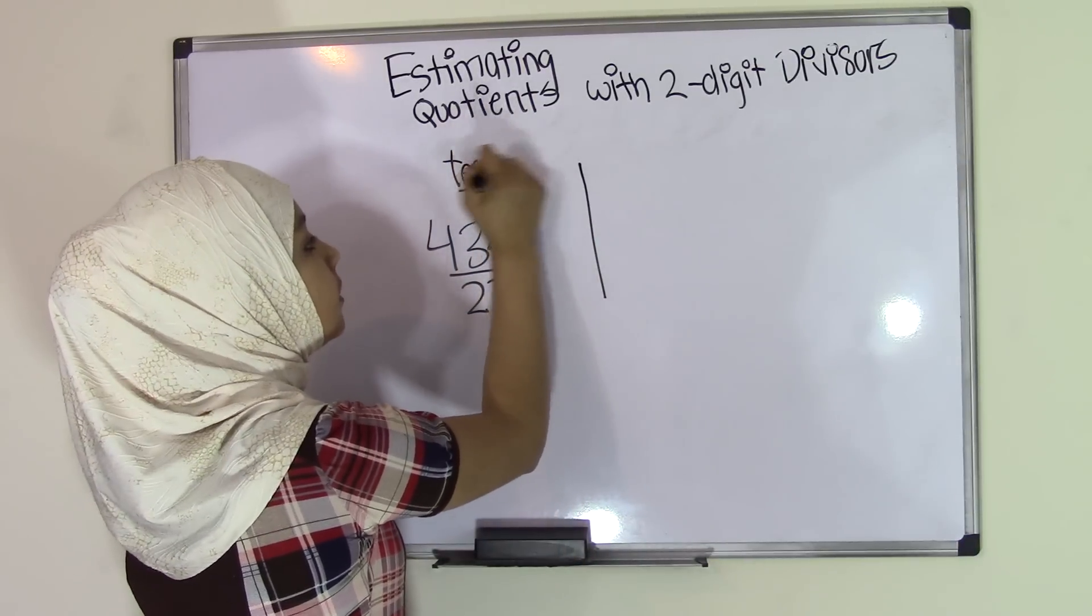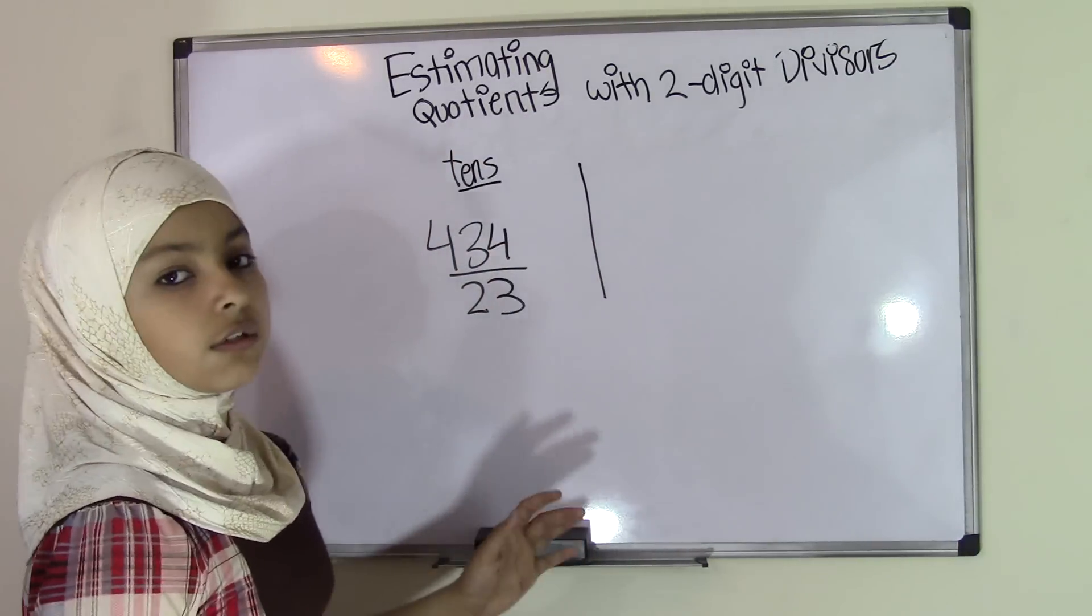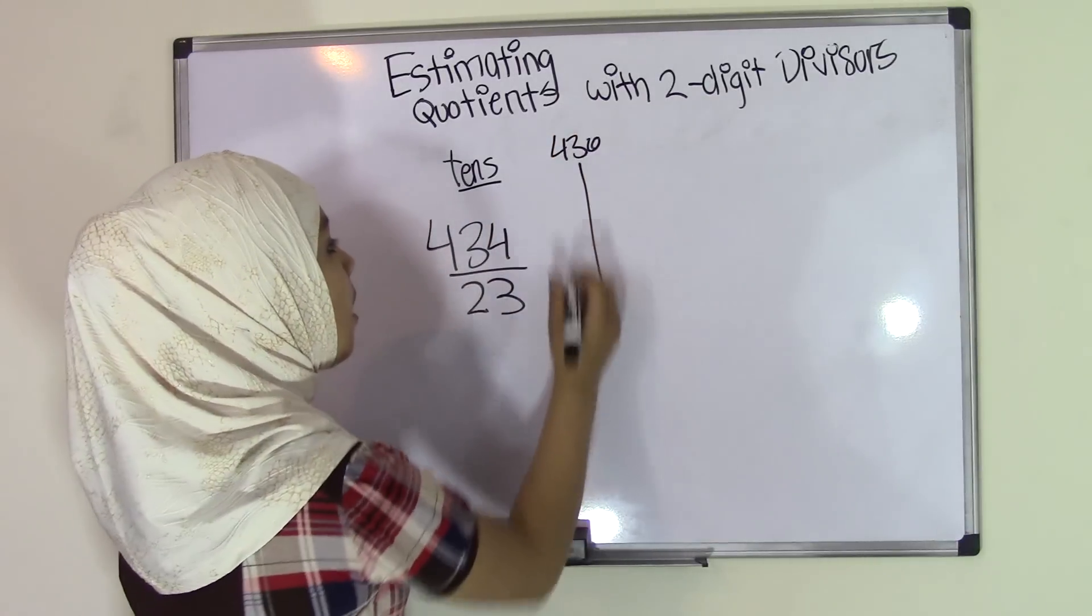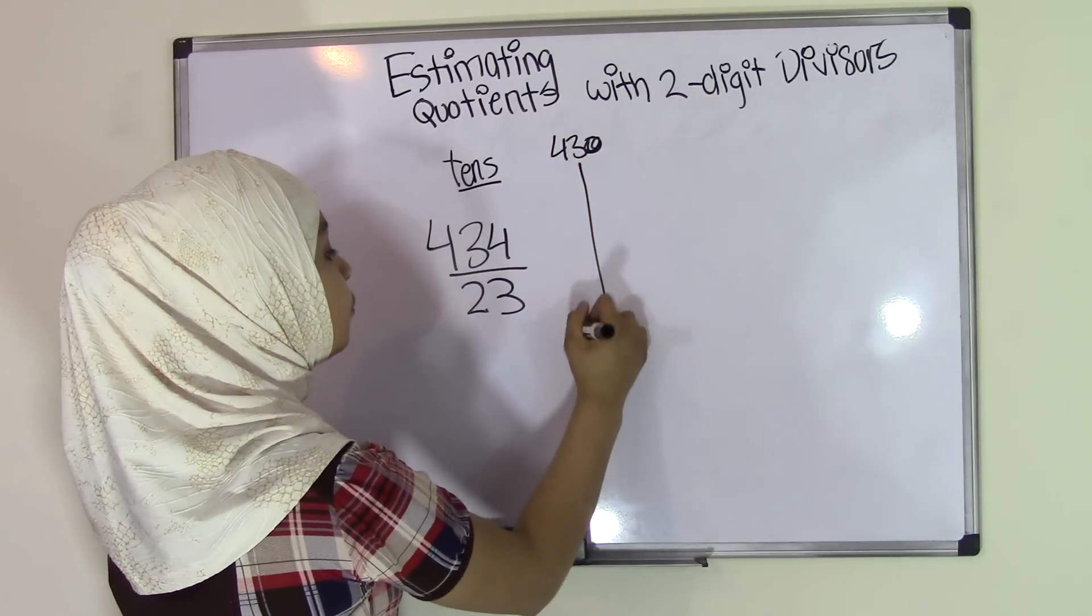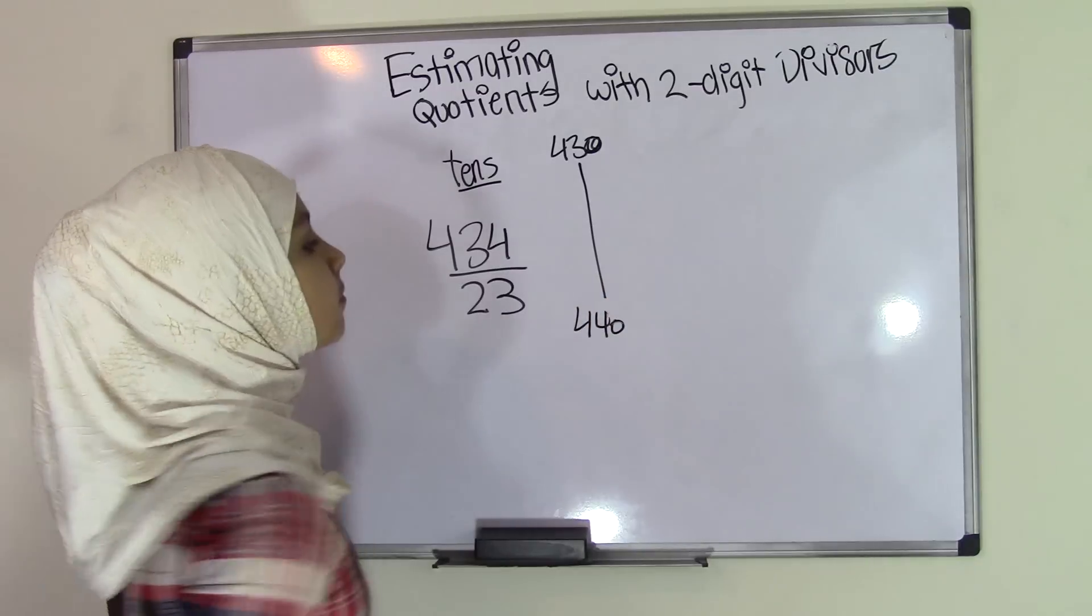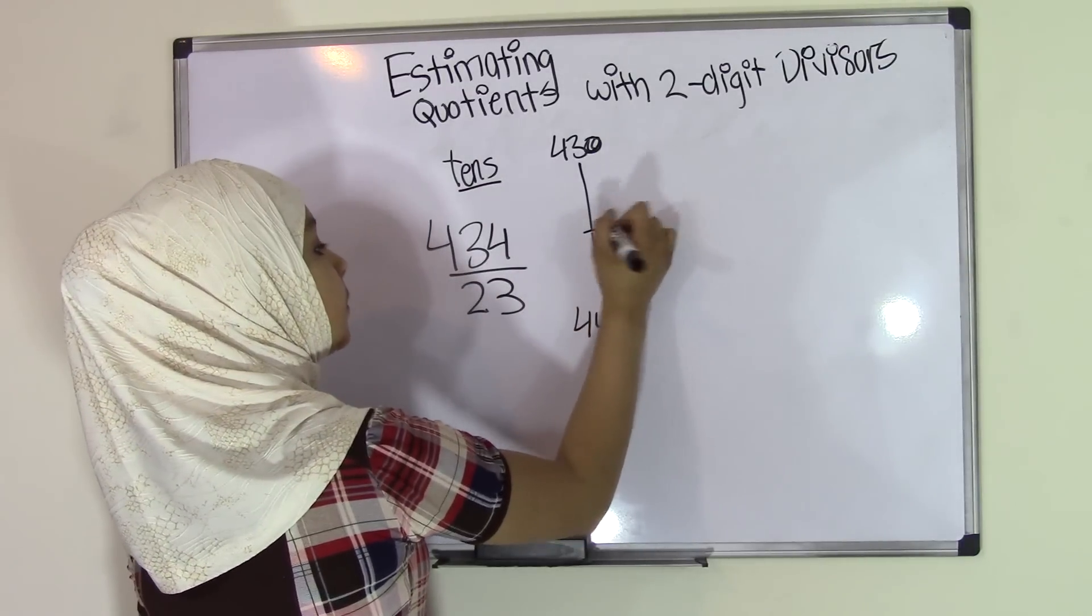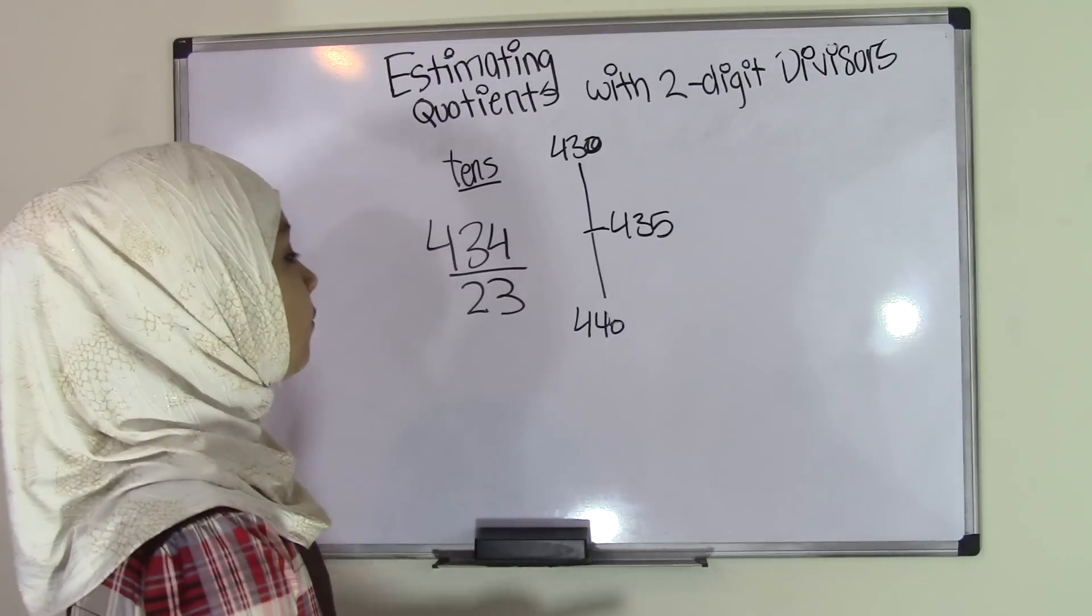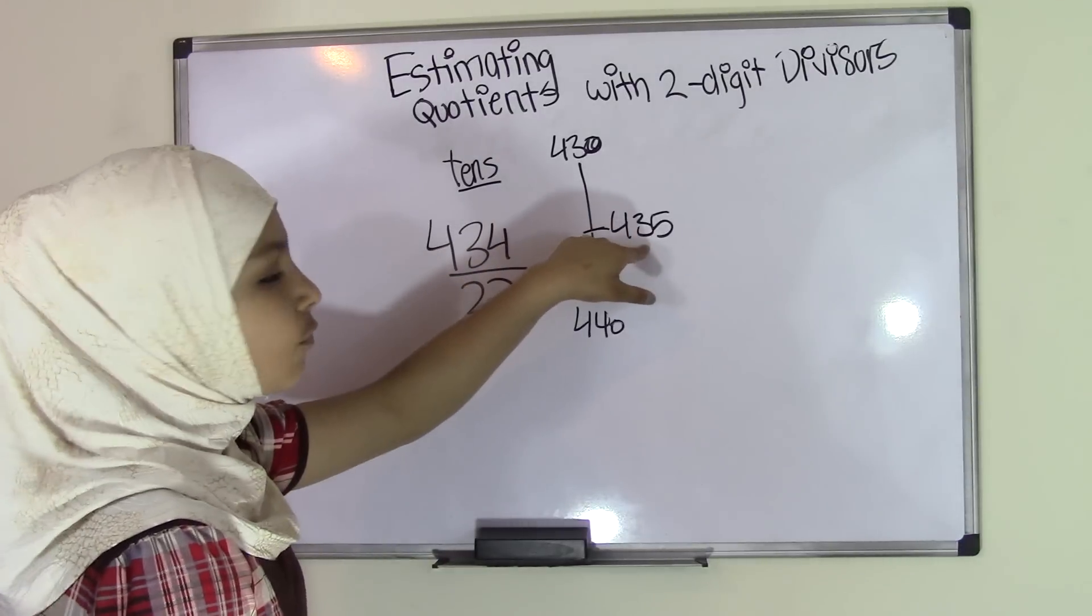Now in this case, let's say we're rounding to the nearest tenths place. What are the nearest tenths for 434? That would be 430 and 440. In the middle would be 435. Now using our common sense, we know that 434 is less than 435.